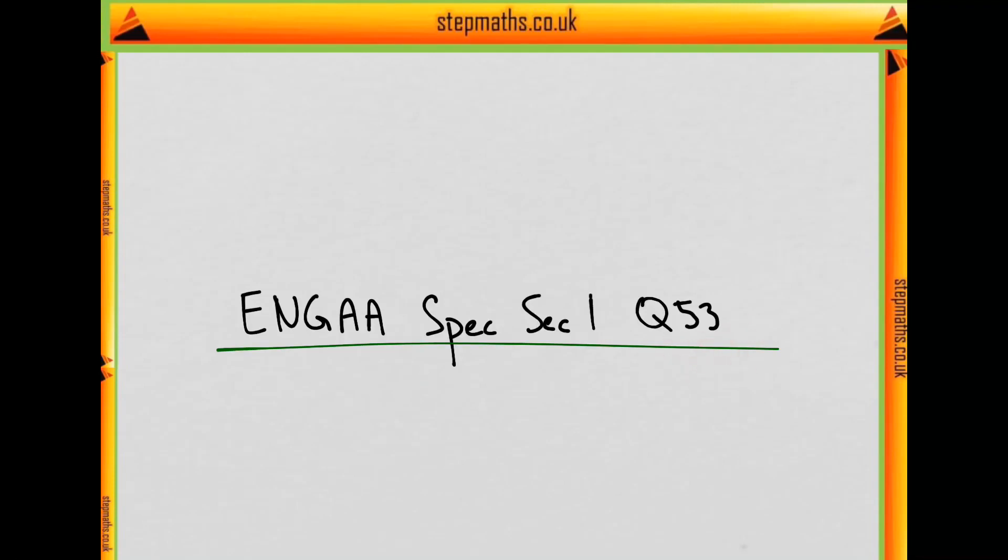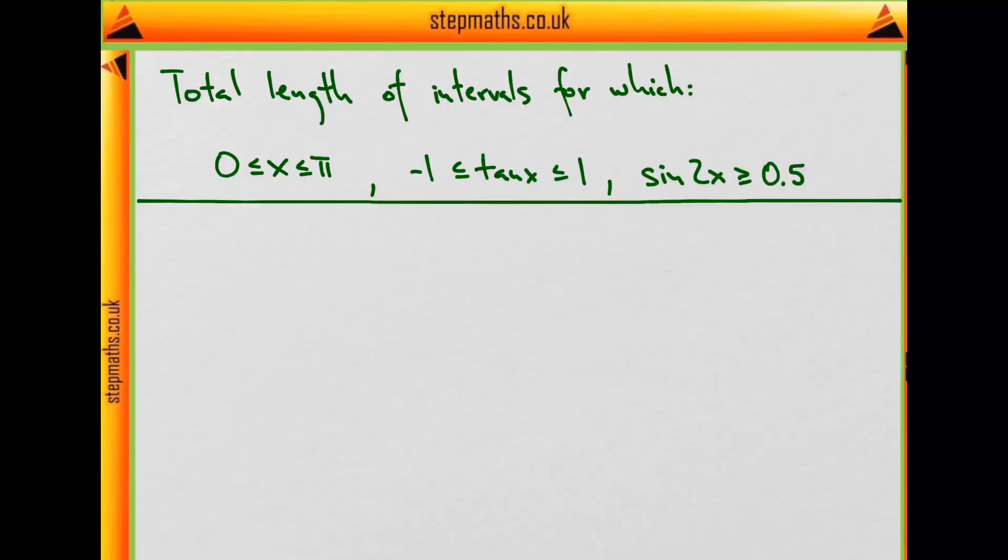In this video, we'll look at question 53 from the specimen paper. So in this question, we are supposed to find the total length of intervals for which all of the following three conditions are satisfied.